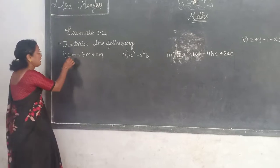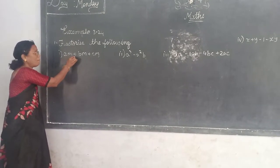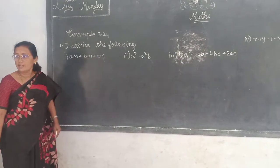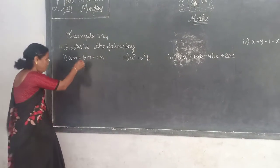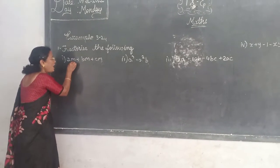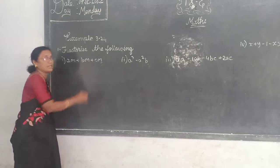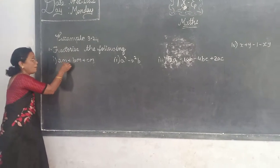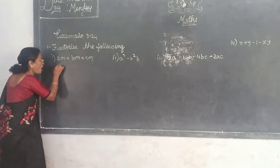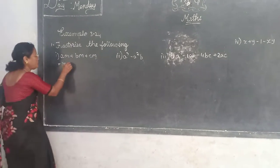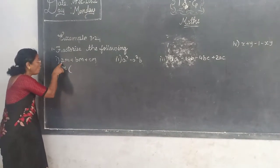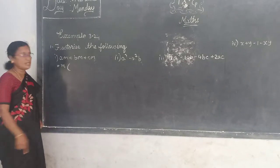First problem: Am + Bm + Cm. What are the common ones here? Am, Bm, Cm. So what is common? You have to take it out. Yam into two — while you are taking common, what is remaining you have to see. Understand?